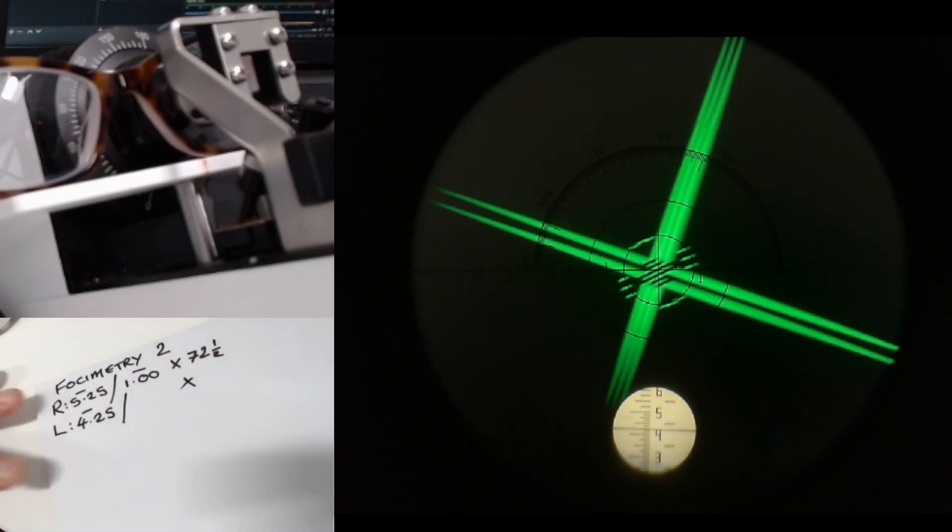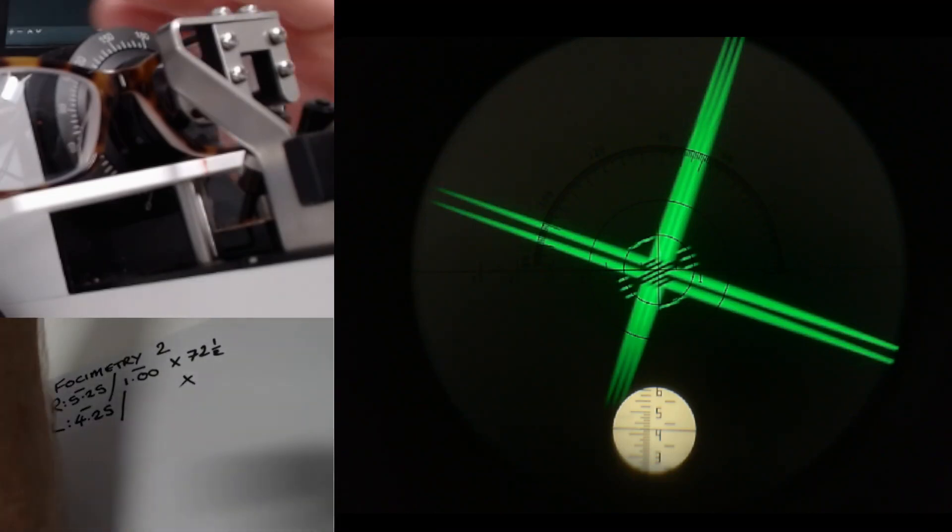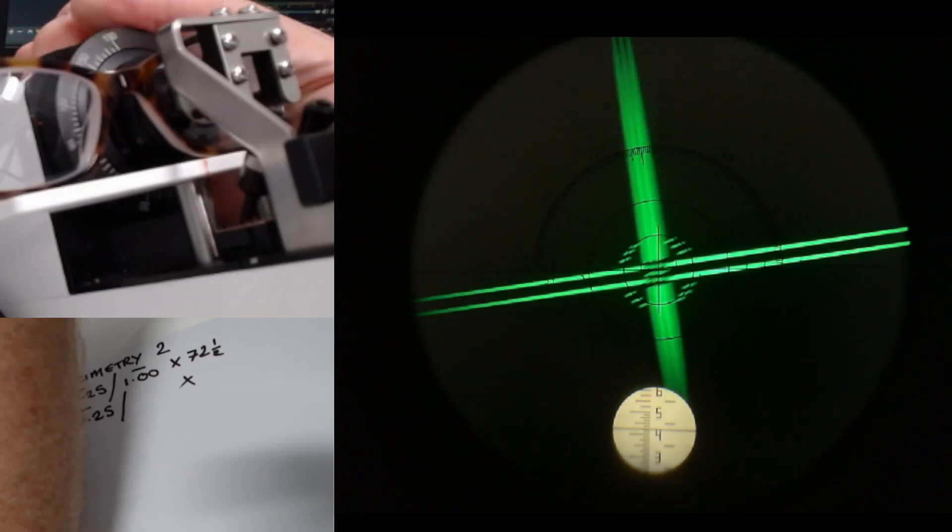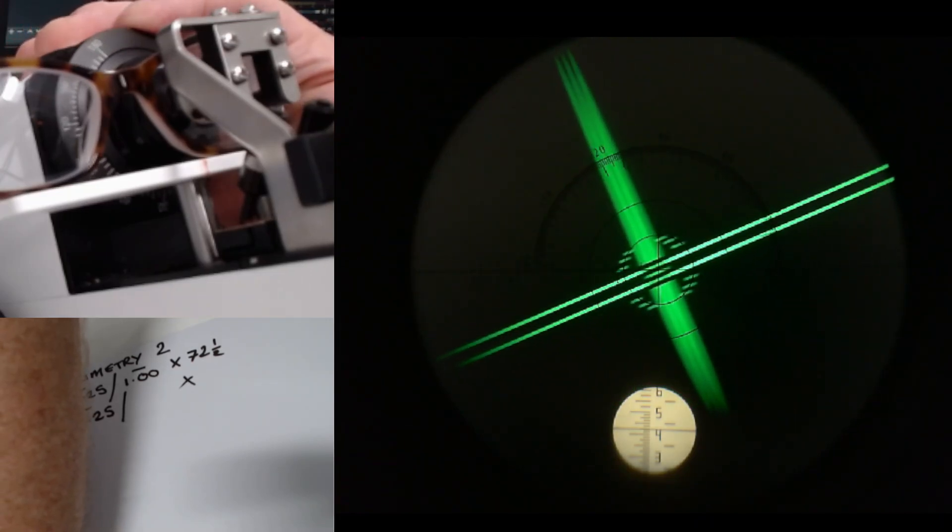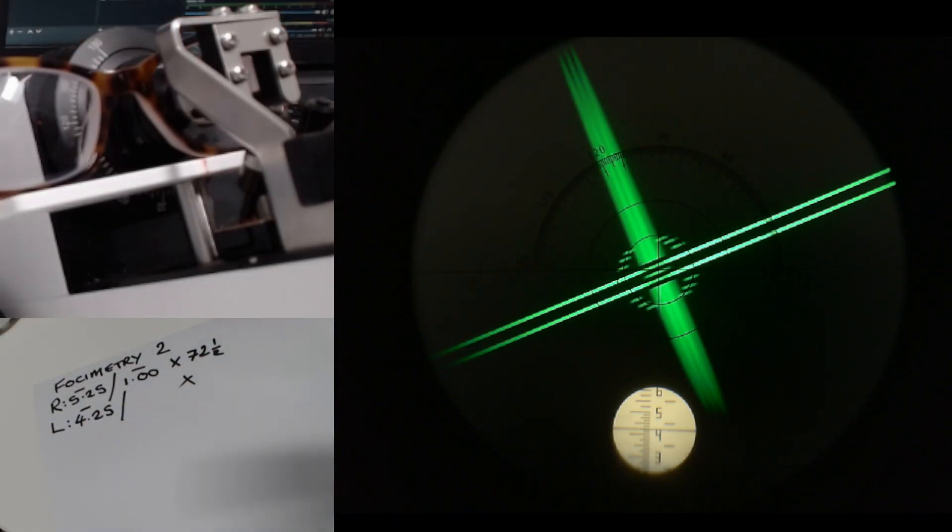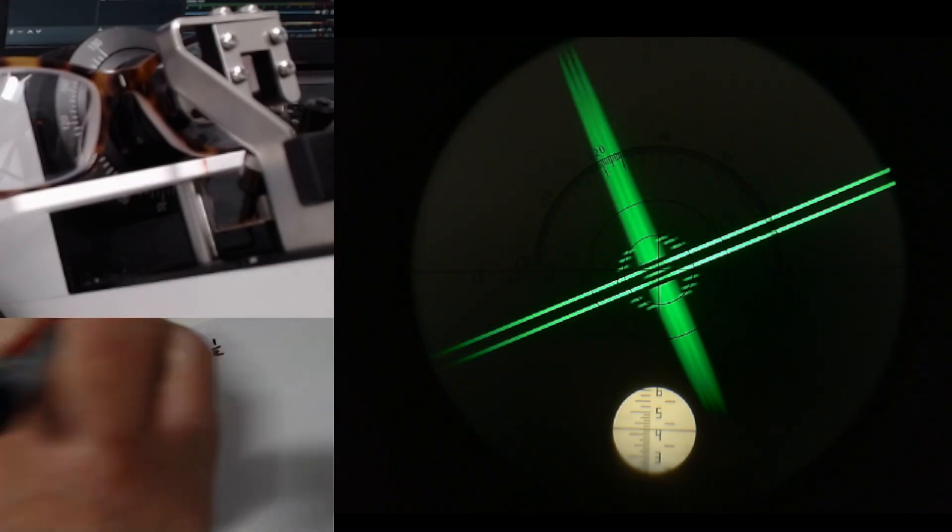I'll just leave space for the cyl and the axis there. I'm going to turn the axis until the two lines line up with that first reading there. It's not super visible, but it's between the 110 and 120. So it's smack on 115 for the axis.